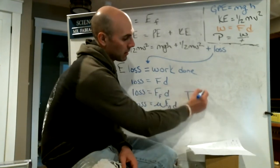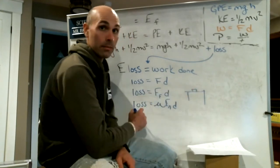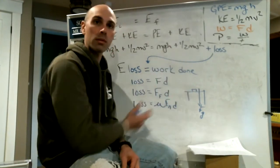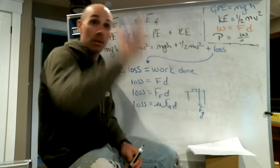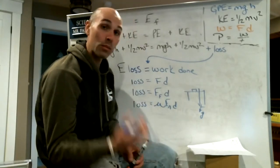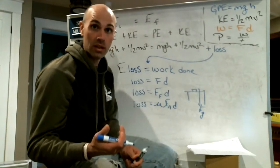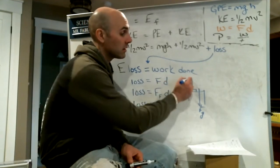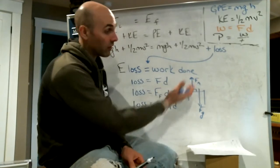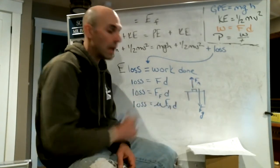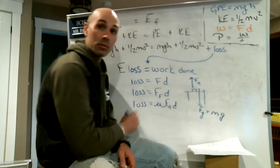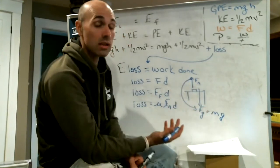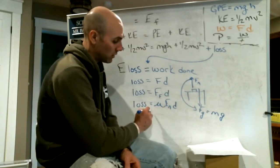Remember: a book on a table is pushed down by gravity and pushed up by the normal force, perpendicular to the surface. So Fn equals Fg, and Fg equals mg, therefore Fn equals mg. We can replace Fn with mg: loss equals mu times m times g times d.